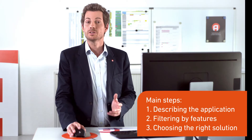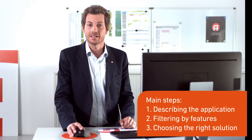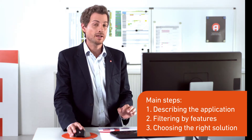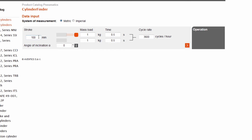In three simple steps, the Cylinder Finder will help us identify the right product for our application. Let's start by specifying the parameters of our application with values for stroke, mass load, and angle of inclination.